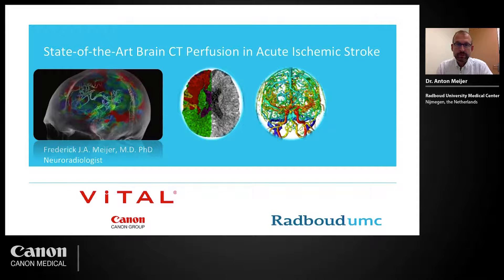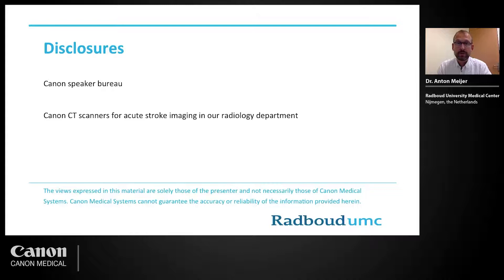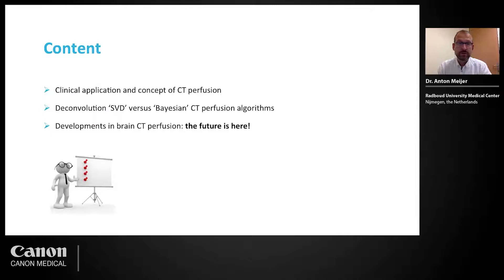Thank you for this kind introduction. I would also like to thank the organisers for inviting me. I'm Anton Mayer, neuroradiologist at the Radboud University Medical Center in Nijmegen, the Netherlands. I should disclose that at our department we use Canon CT scanners for performing acute stroke imaging. In this presentation, I will discuss the clinical application and concept of brain CT perfusion, then compare the deconvolution-based CT perfusion algorithm versus the Bayesian CT perfusion, and finally discuss some exciting new developments in brain CT perfusion.